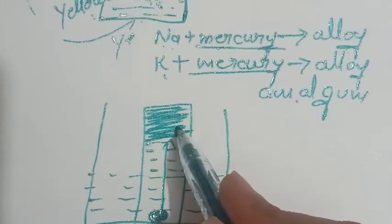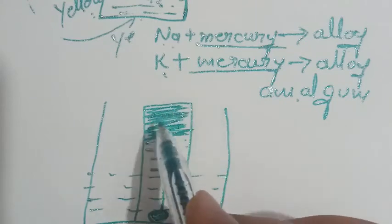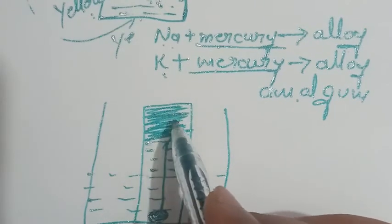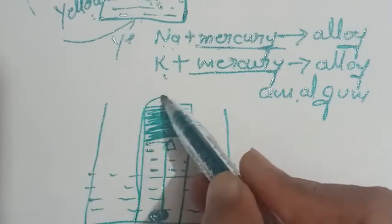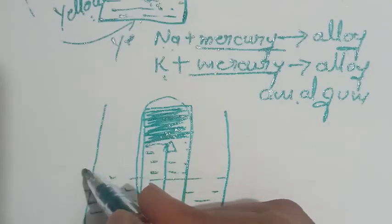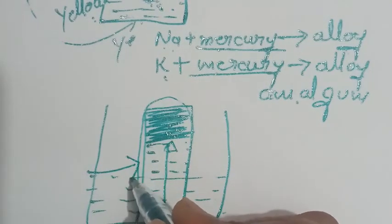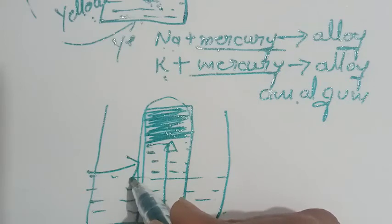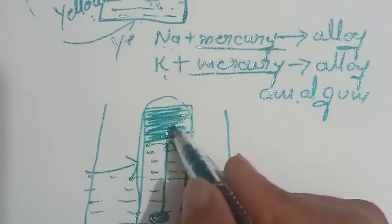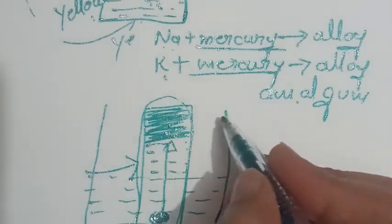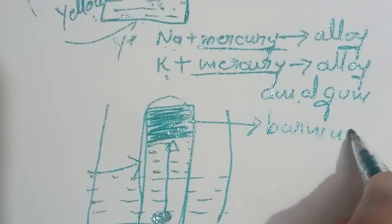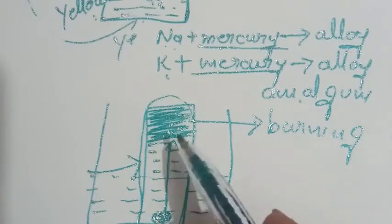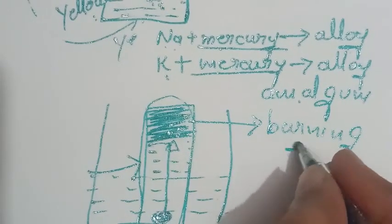To test that the invisible gas present is hydrogen, we invert the test tube and open it. When we open it, we insert a burning splinter or matchstick inside. It will start burning because hydrogen gas is a highly inflammable gas. It will start burning with pop sound.